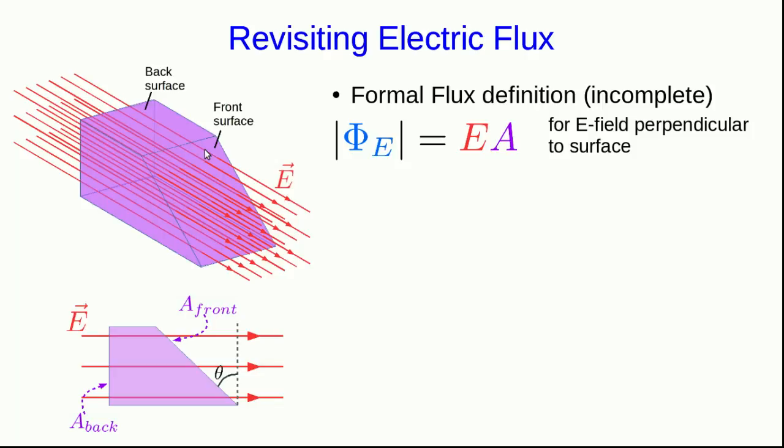So, there's some area of the back surface and some area of the front surface. The reason I've chosen this odd shape is that calculating the flux through the back surface is straightforward. It is simply the electric field times the area, except that since the electric field is entering, it has to be negative.